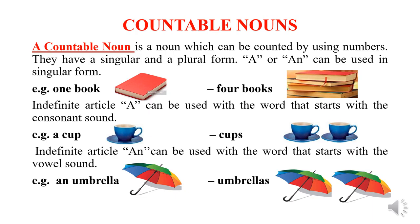Do you know how many letters are there in the English alphabet? There are 26 letters. Out of 26 letters, 21 are the consonants and 5 are the vowels — A, E, I, O, U. Indefinite article A can be used with a word that starts with the consonant sound. For example, cup — it is a cup in singular form and the plural is cups. Indefinite article AN can be used with a word that starts with the vowel sound. For example, umbrella starts with U which is a vowel, so in singular form it is an umbrella and the plural is umbrellas.